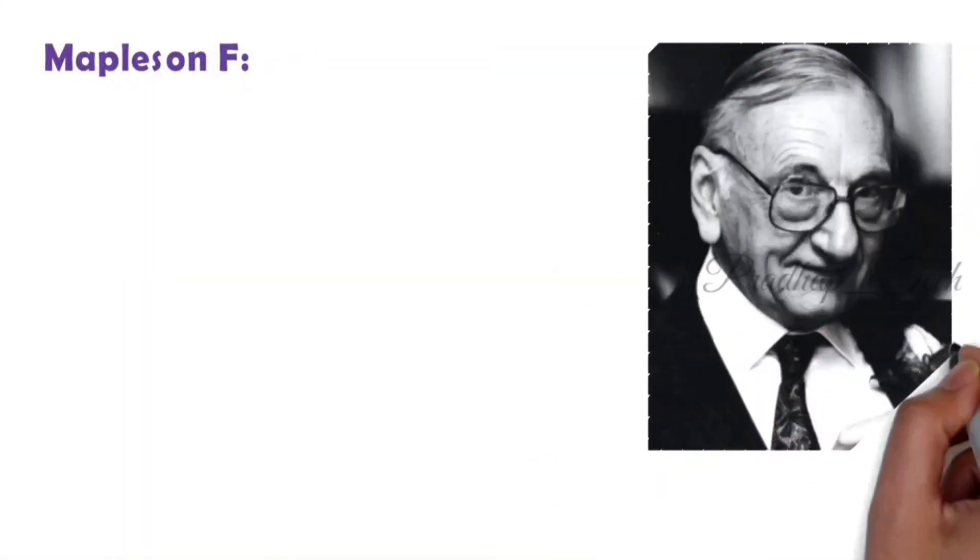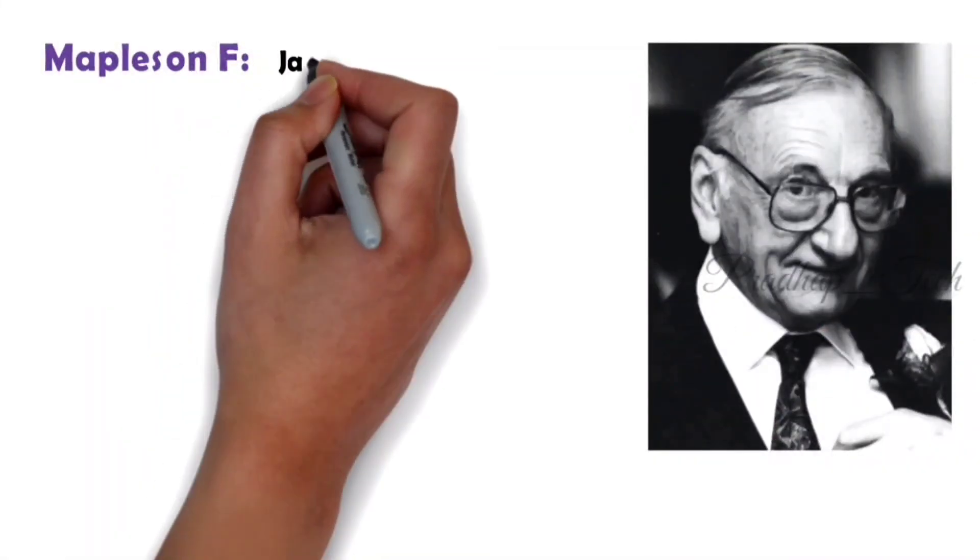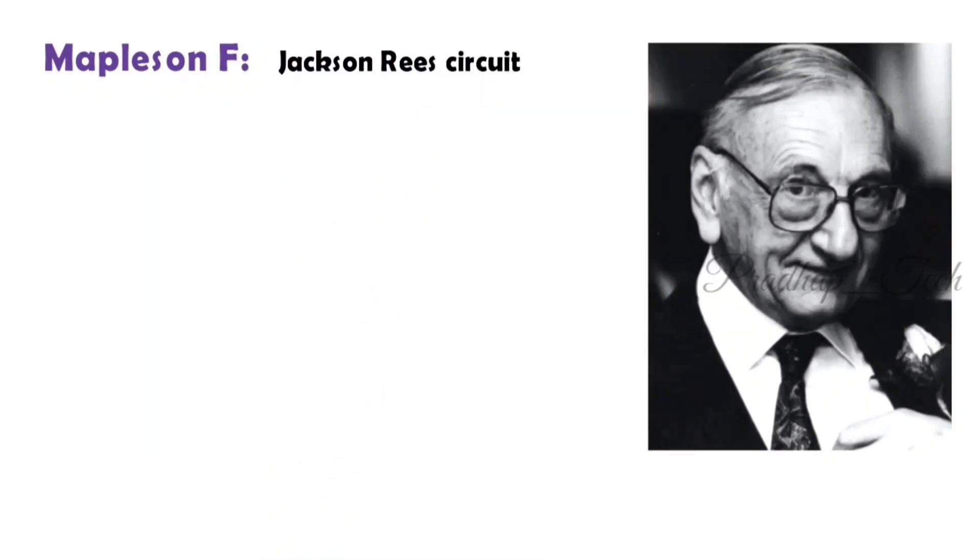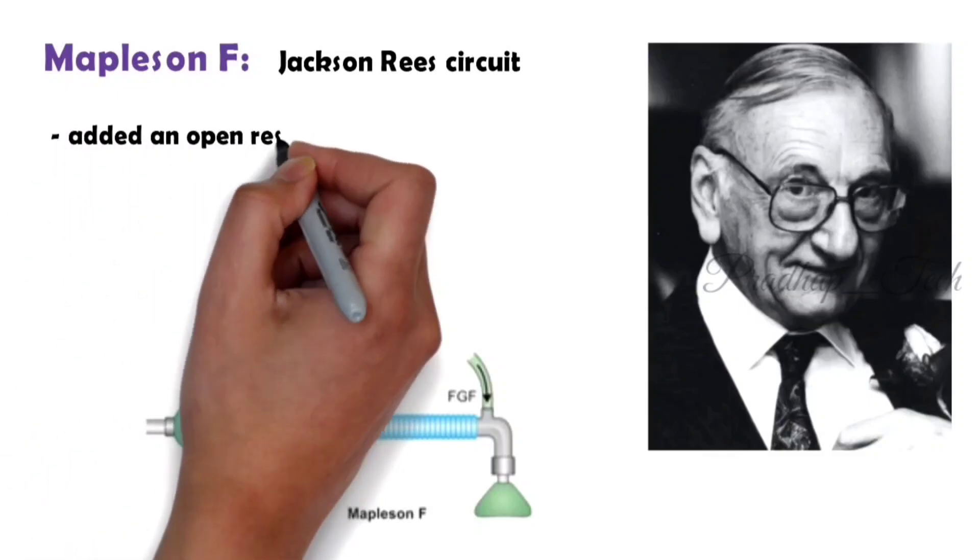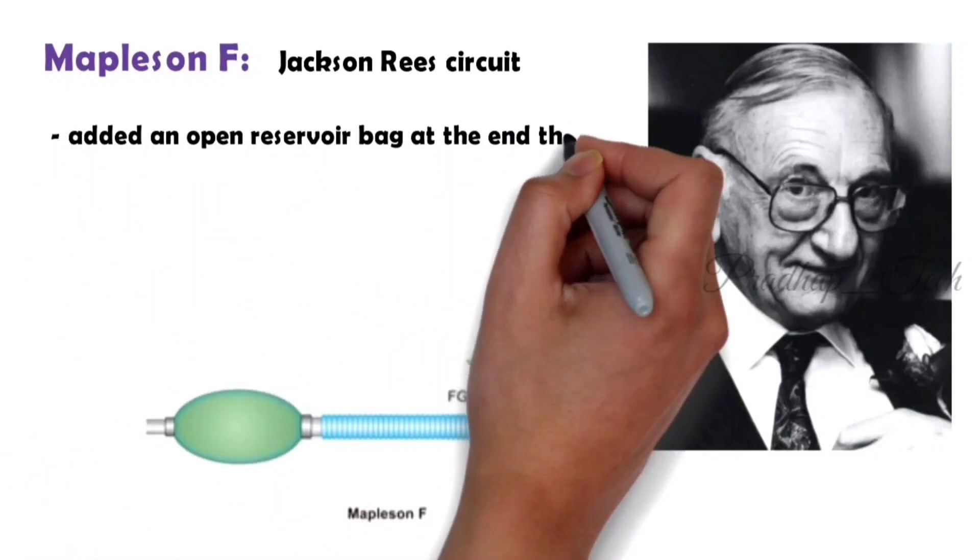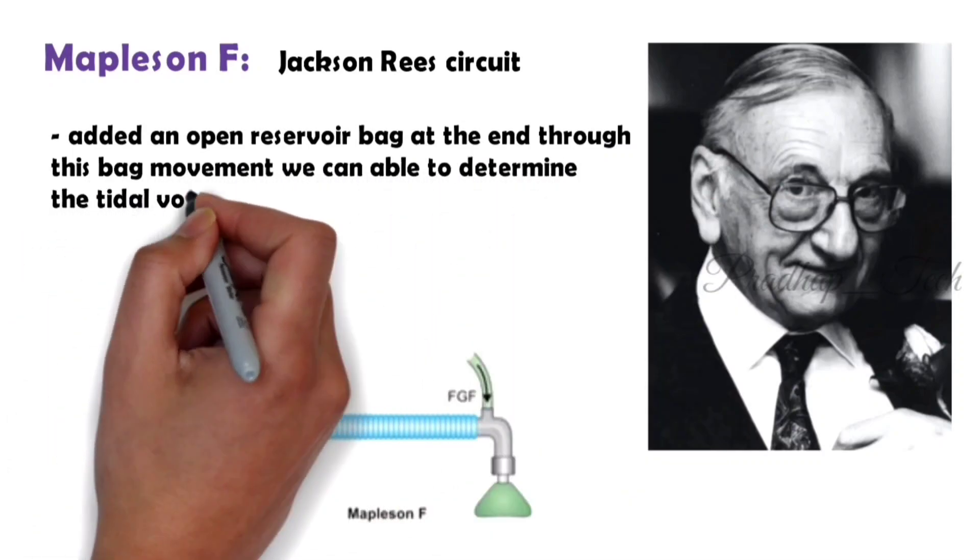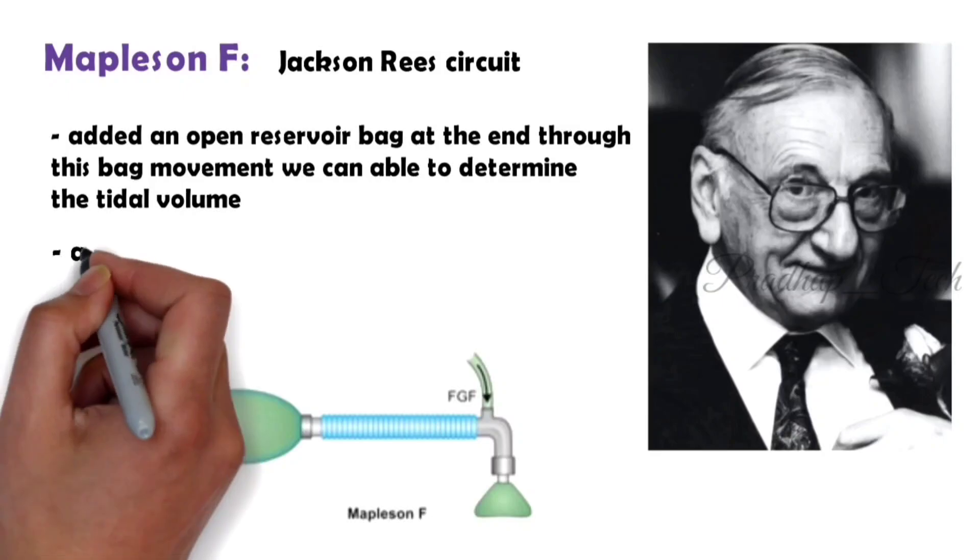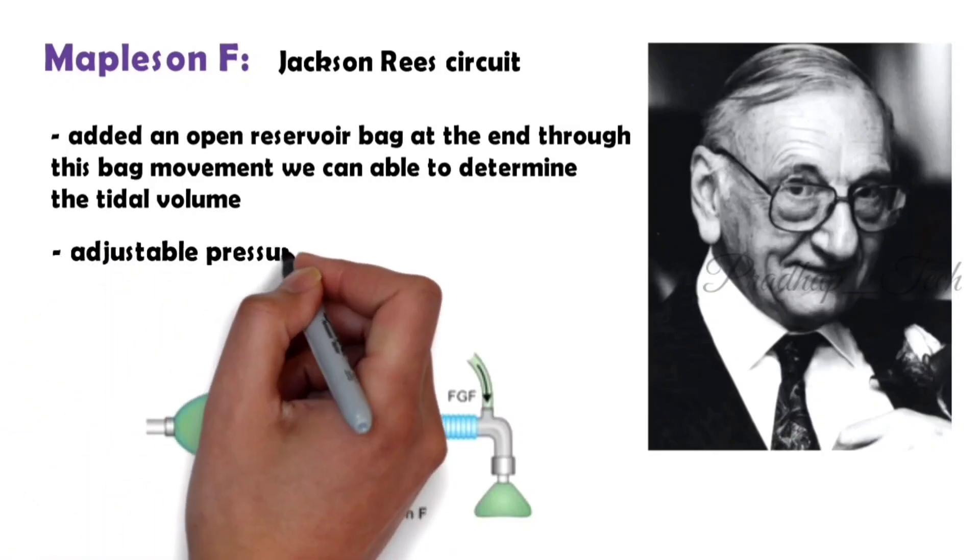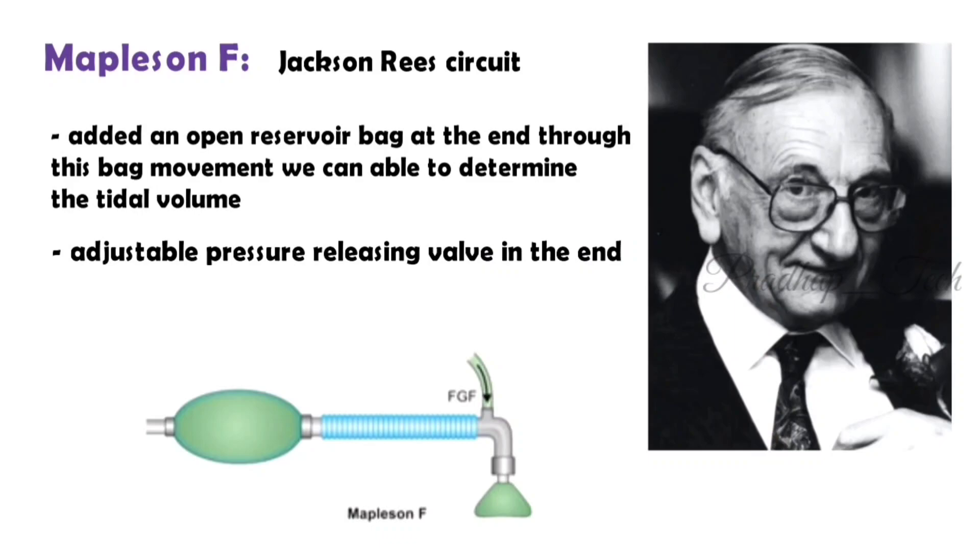Mapleson F: this circuit was found by Jackson-Reese, so it is also known as the Jackson-Reese circuit. It is a modification of Ayers T-piece. He added an open reservoir bag at the end; through this bag movement we can determine the tidal volume. There's an adjustable pressure releasing valve in the end. By using that valve, this circuit can be used for both spontaneous and controlled ventilation.